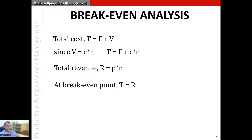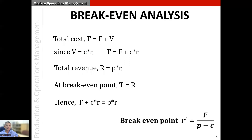The total revenue capital R equals small p times small r. At the break-even point, capital T must equal capital R, giving us capital F plus small c times small r equals small p times small r. Therefore, the break-even point r-prime equals F divided by (p minus c). Using the values of capital F, small p, and small c, we can find out the break-even point.